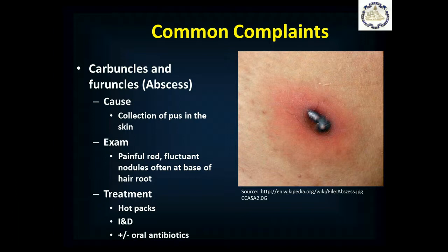Carbuncles and furuncles are abscesses — collections of pus in the skin where the body walls off an infection. The pus represents white blood cells fighting the infection. You get a painful, red, fluctuant lump, often at the base of a hair root. Treatment is hot packs and incision and drainage. If there's cellulitis with it or it's bigger than five centimeters, consider oral antibiotics. However, oral antibiotics alone won't fix abscesses because they can't penetrate inside; once drained, antibiotics often don't change the outcome unless there's a surrounding cellulitis.